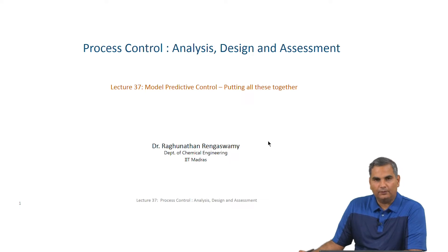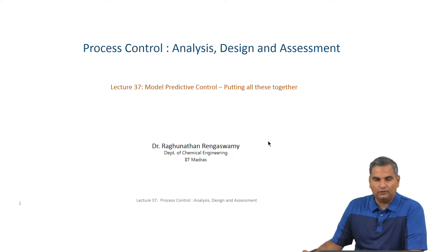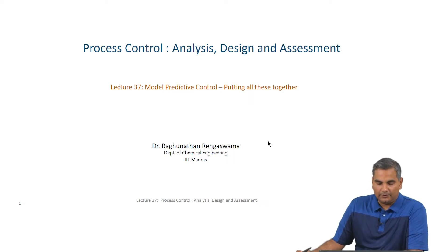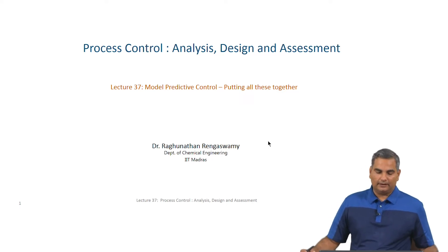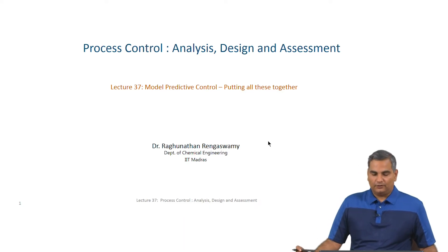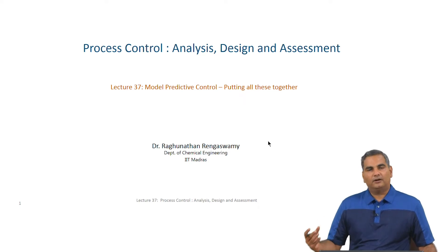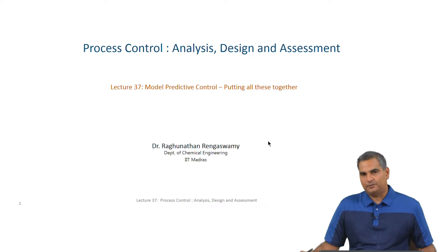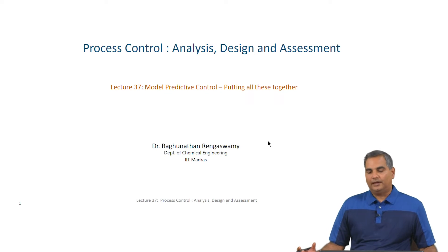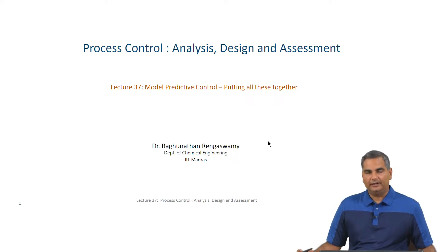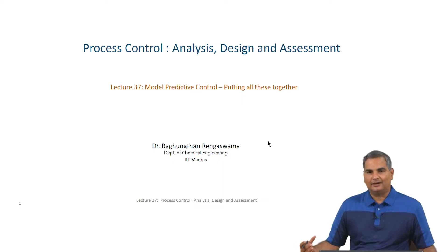I have talked about how an optimization algorithm has an objective function, constraints, and decision variables, and I have related all of these to the control viewpoint. I also talked about how we get a discrete model of the process to put together this model predictive control formulation. In this lecture I will quickly combine all of these to show how the optimization formulation is put together. The beauty of MPC is that since we have an optimization formulation and not an analytical expression for the control law, any optimizer can be used to solve this problem. The accent in MPC is more on the concepts of formulation rather than the solution, which is a standard optimization solution.